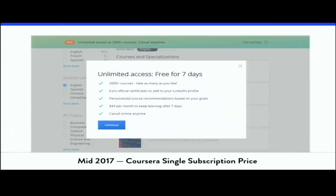One of my favorite experiments that Coursera tried was a single-price subscription: instead of a separate subscription for each specialization, you pay $49 a month and get access to Coursera's entire catalog — all graded assignments and certificates. This meant the cost of Coursera went down drastically compared to paying $39 to $59 per specialization separately. They ran this test for a few months, but for unknown reasons decided not to move forward with it.